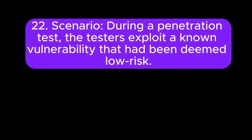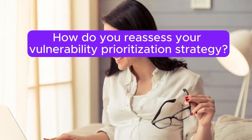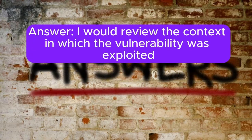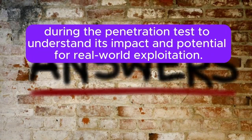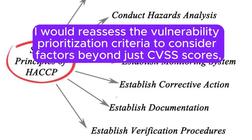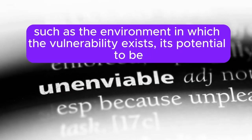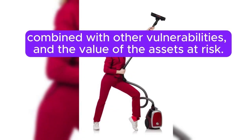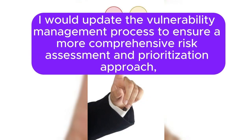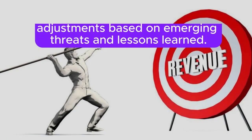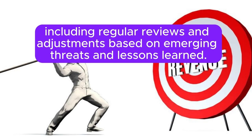Scenario 22: During a penetration test, the testers exploit a known vulnerability that had been deemed low risk. How do you reassess your vulnerability prioritization strategy? I would review the context in which the vulnerability was exploited during the penetration test to understand its impact and potential for real-world exploitation. I would reassess the vulnerability prioritization criteria to consider factors beyond just CVSS scores, such as the environment in which the vulnerability exists, its potential to be combined with other vulnerabilities, and the value of the assets at risk. I would update the vulnerability management process to ensure a more comprehensive risk assessment and prioritization approach, including regular reviews and adjustments based on emerging threats and lessons learned.